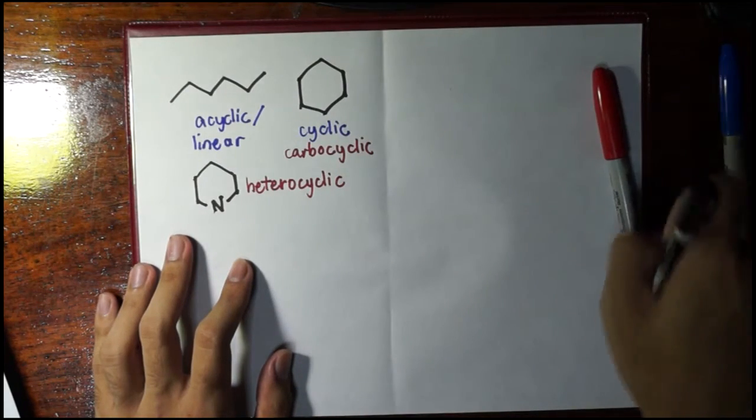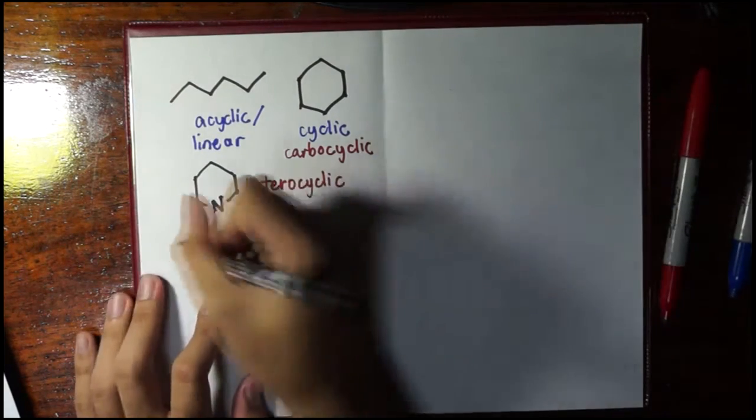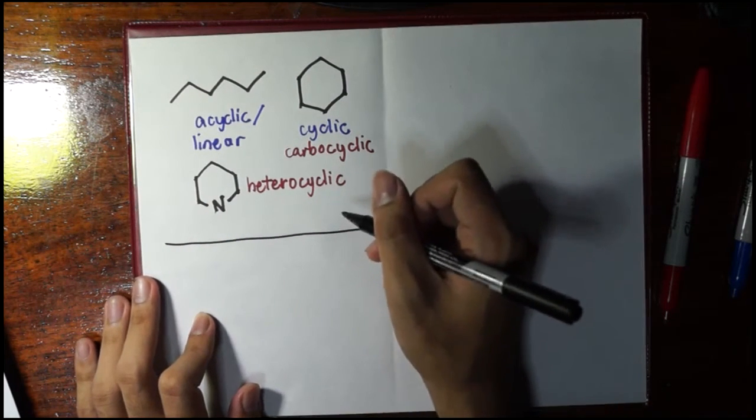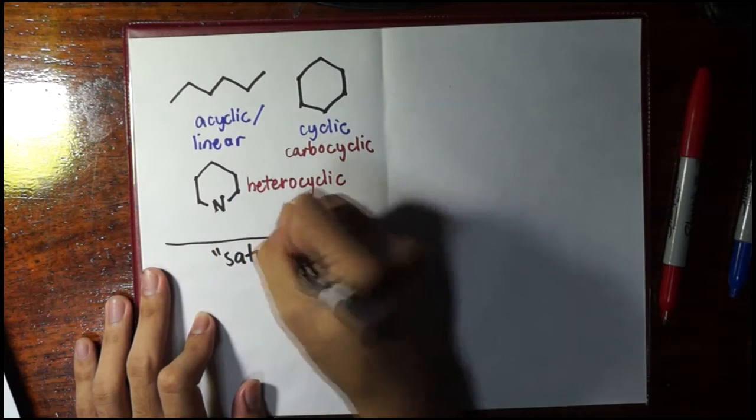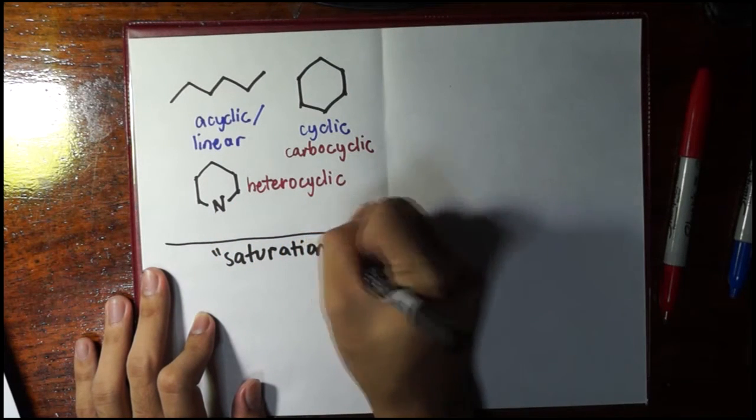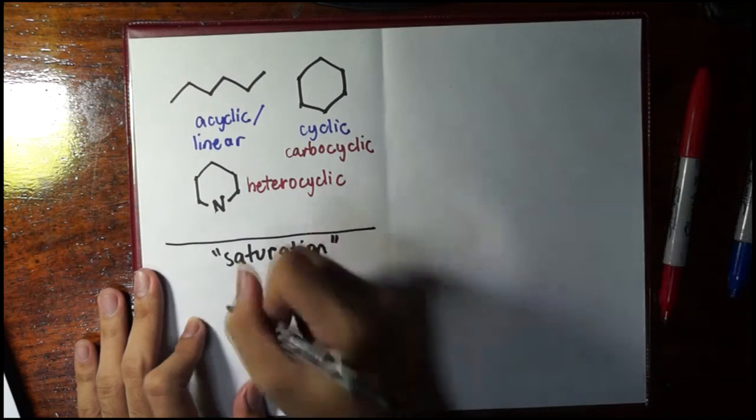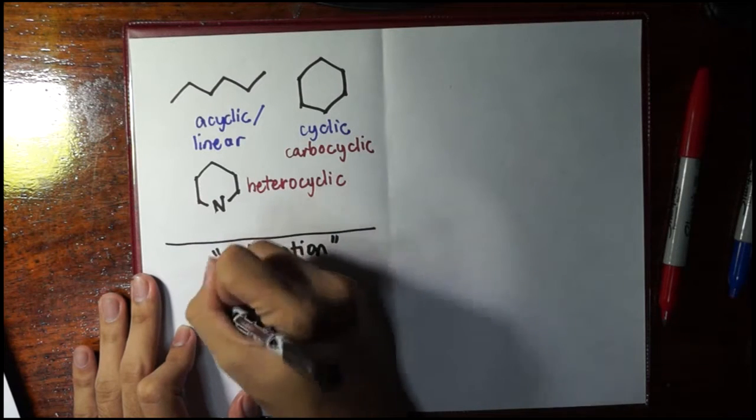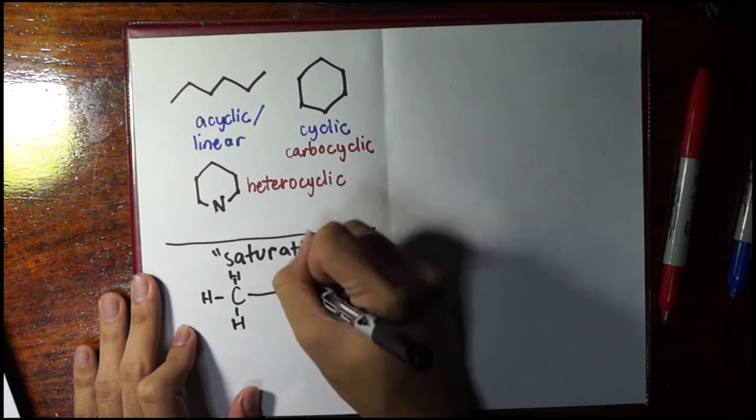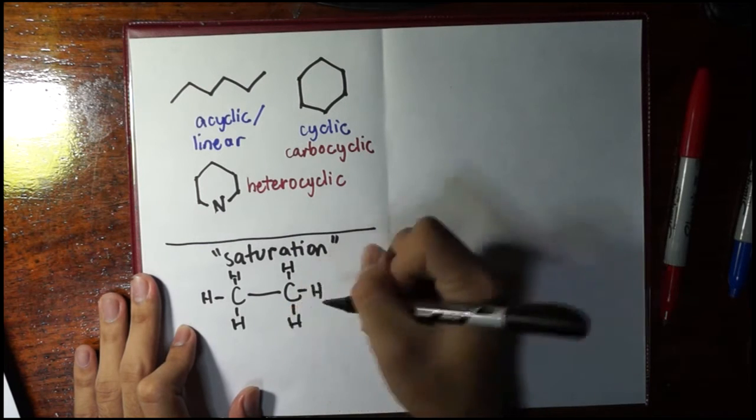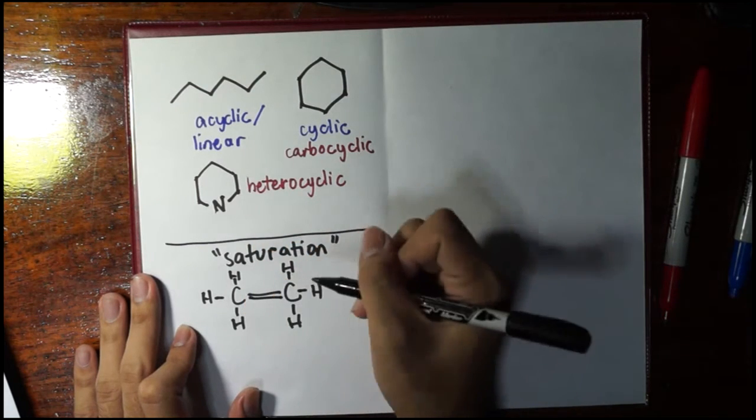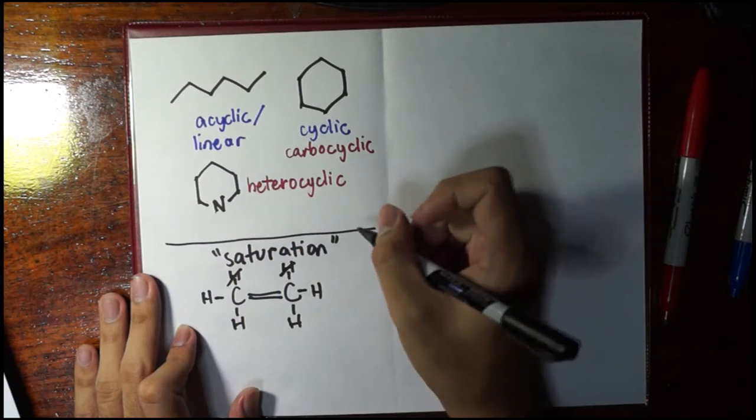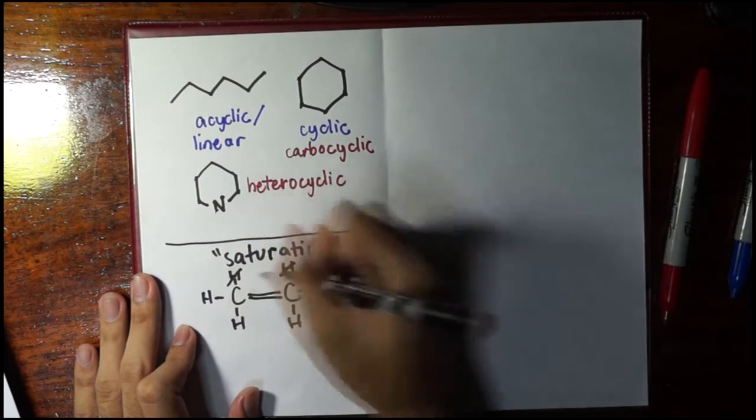Now, after that, after talking about whether it's a ring or not, we can classify also compounds based on their saturation, and saturation means that each carbon is saturated or filled up with hydrogens. Remember, for example, I said that sometimes you can have all single bonds between carbon and hydrogen. The moment we add another bond between these two carbons, what will happen to the Hs? Each carbon will lose one H.